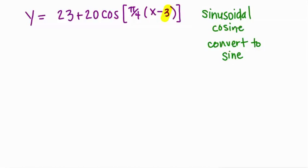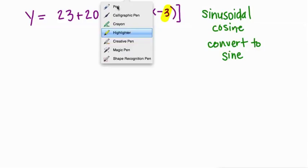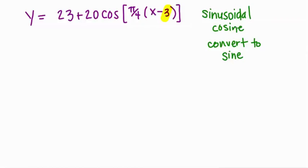So what we want to do, first thing that is very, very important, so pay close attention. I've written the equation in the form y equals d plus a times cosine of b times x minus c.